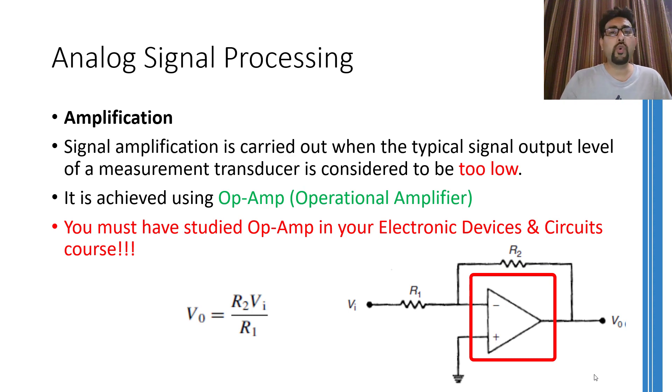It requires its own power source to function. That is why it is called an active device. You must have studied the working of an operational amplifier in some course related to electronic devices and circuits. Therefore, it would be out of the scope of this course to discuss how the output voltage is equal to the ratio of the resistance multiplied with the input voltage.